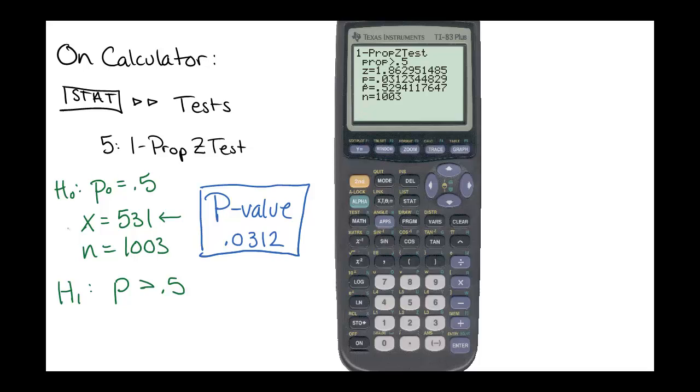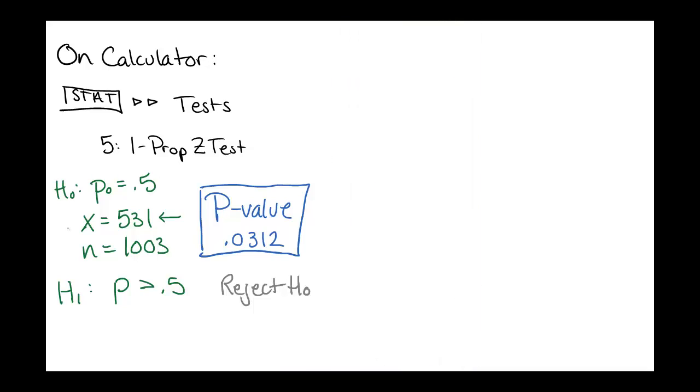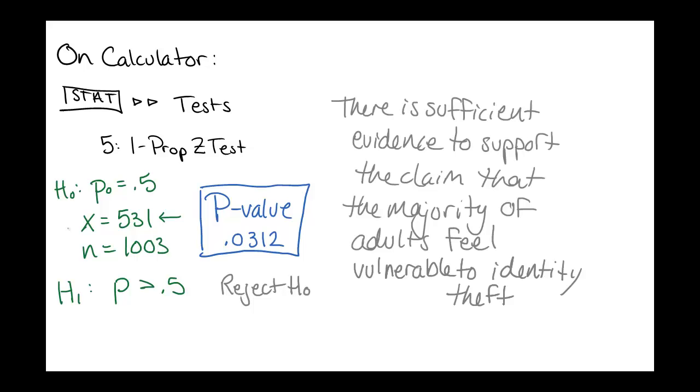Now keep in mind that at the very end, when we say that we reject H0, we then would want to say, well, what does that mean? So if we're rejecting the null hypothesis, that means that we have evidence that the alternative hypothesis would be the case. So we might say, as our conclusion, there is sufficient evidence to support the claim that the majority of adults feel vulnerable to identity theft. That was rejecting our null hypothesis in favor of the alternative hypothesis that the proportion was greater than 0.5.